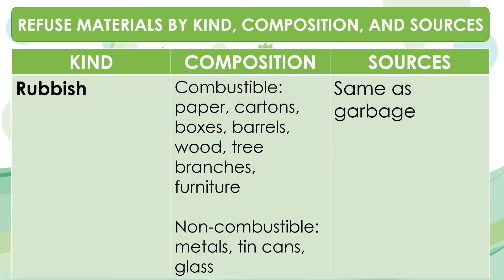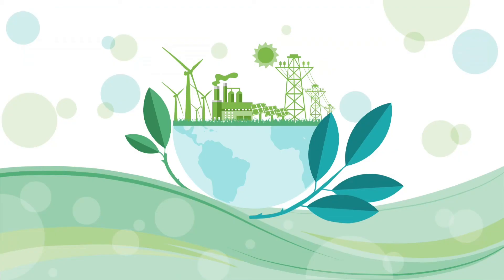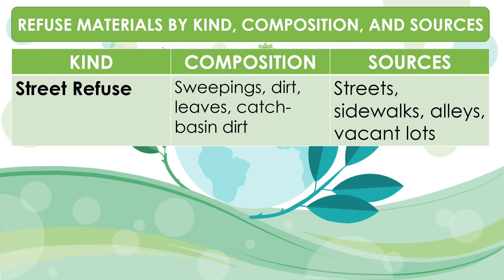The second one is rubbish. When we say rubbish, these are waste materials such as bottles, broken glass, tin cans, waste papers, discarded porcelain wares, pieces of metal, and other wrapping materials. We have two types of rubbish: combustible and non-combustible. Combustible refers to any material that will catch on fire and burn, while non-combustible materials refer to construction materials that will not ignite, burn, or release flammable vapors. The sources are the same as garbage. Next is street refuse, such as sweepings, dirt, leaves, and catch basin dirt. The sources are streets, sidewalks, alleys, and vacant lots.